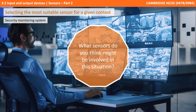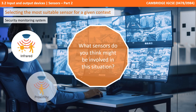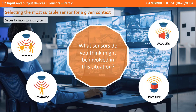As well as understanding what each sensor does and the sort of information it collects, it's important in the exam that if you're given an appropriate scenario or context, you can pick and justify the most suitable sensors. Here we have a security monitoring system for a building or workplace. Pause the video and think about what sensors might be involved. The most obvious ones would be infrared, proximity, pressure and acoustic — all useful ways of detecting an intruder. What's important in the exam is that you justify your answer and why it would be appropriate for the context given.